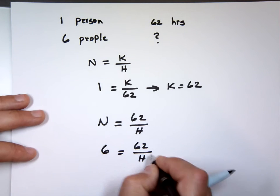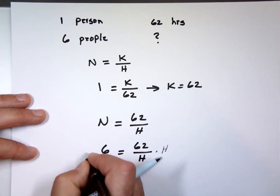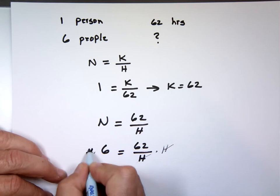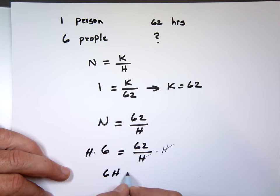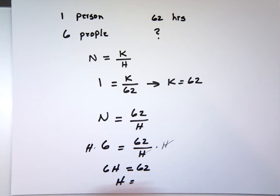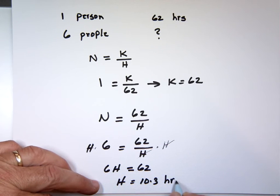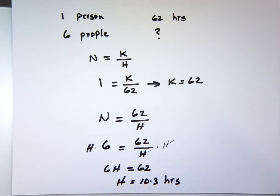Notice we multiply both sides by H to get rid of that H in the bottom. I don't like fractions. 6H equals 62. Is it 10.3? A little bit over ten hours we'll have this room done with six people. That's inverse variation.